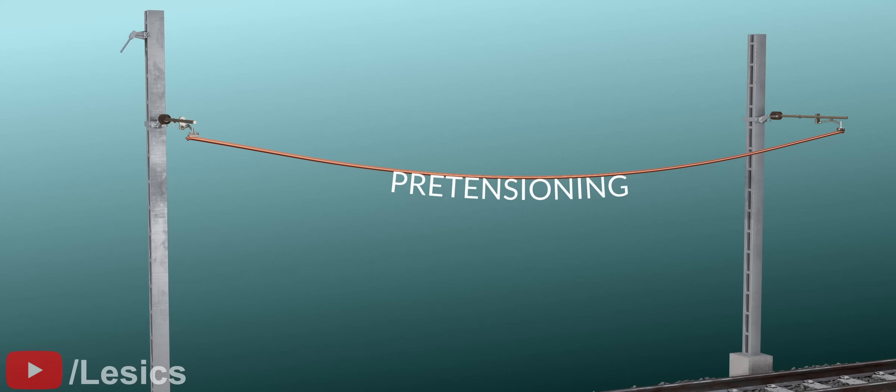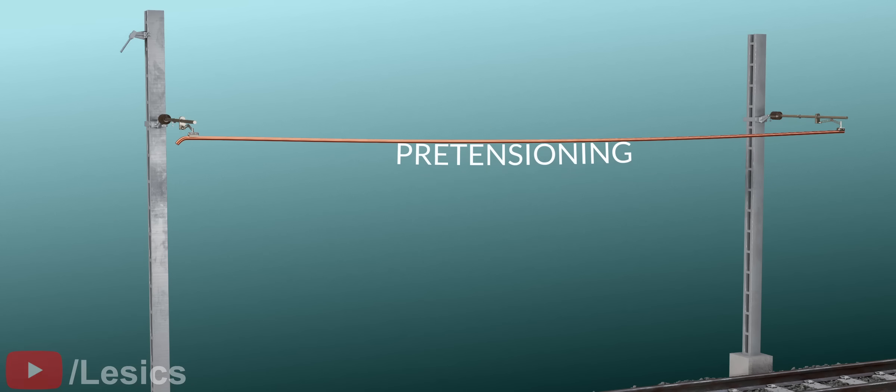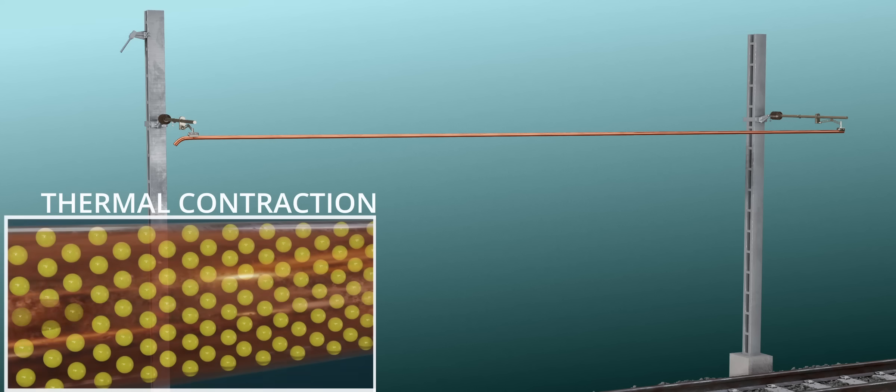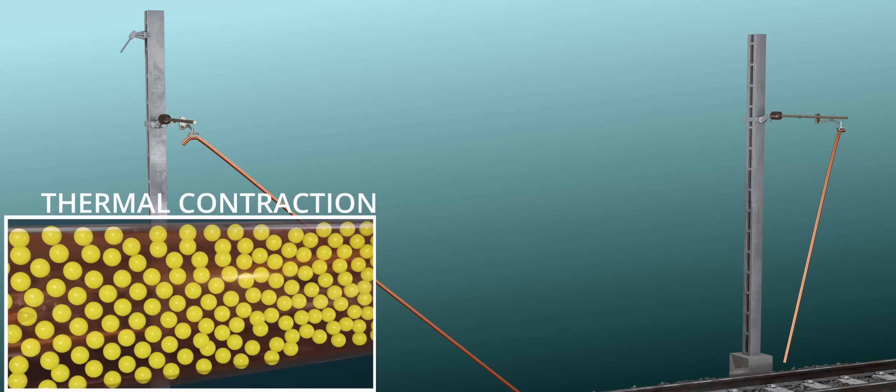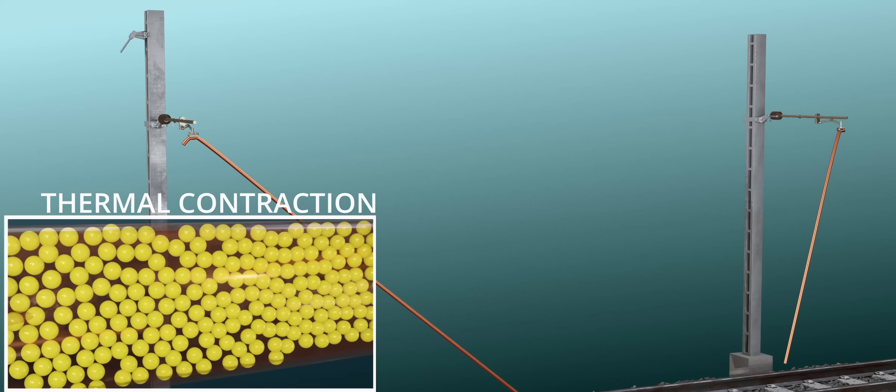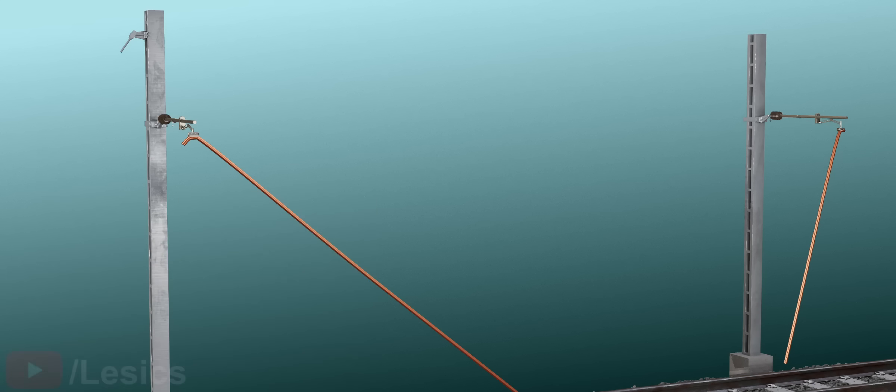Maybe you can tighten these wires too much so that you can reduce the sagging in the summer. However, this wire will break during the cold winter months as the material contracts. Now it is clear why fixing a wire at both ends is not a good idea.